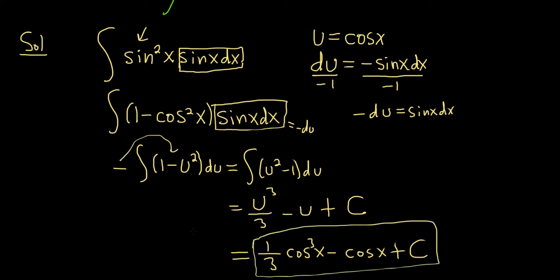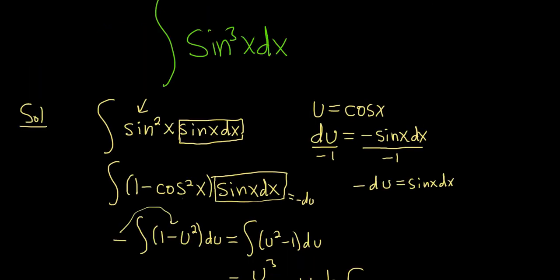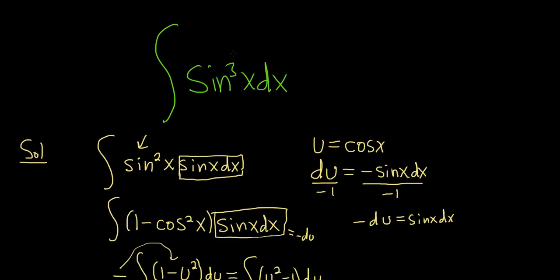This is a really nice problem because it's not super tough, but if you know the trick, it's all about the trick. So whenever you have an odd power of sine or cosine, just save a copy of the odd one, and then u is the other one. And then from there, you can work through it.